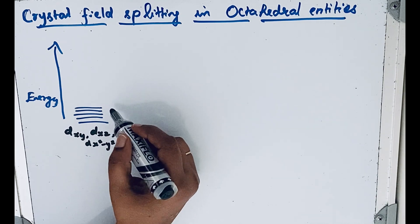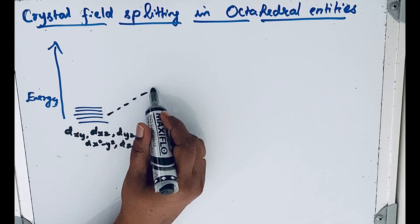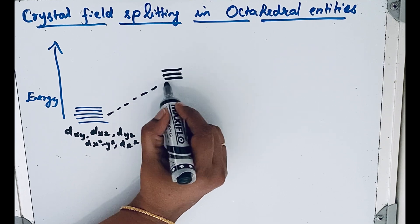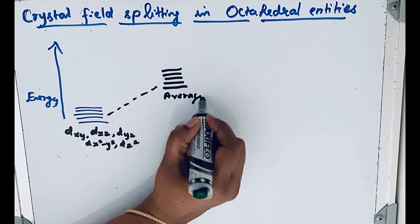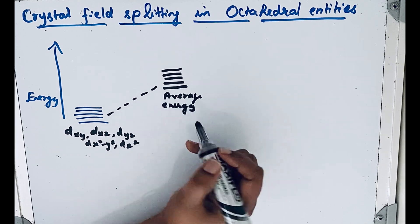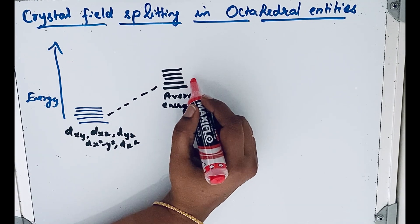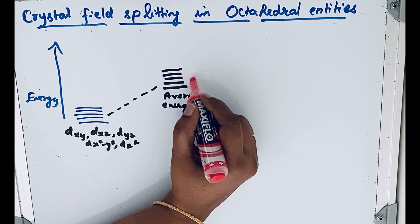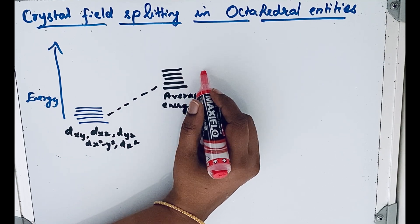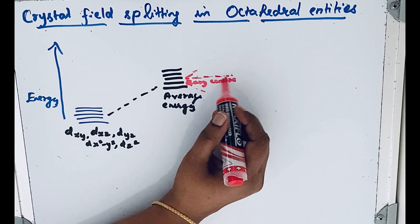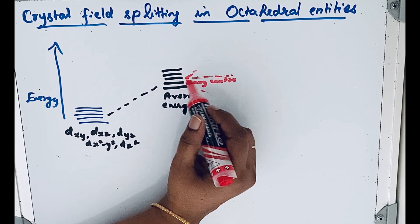These orbitals' energy is increased when they are surrounded by ligands. This average energy, due to repulsion, will split. So due to repulsion, these energy orbitals now split into two sets. This is the barycenter where that energy is constant.